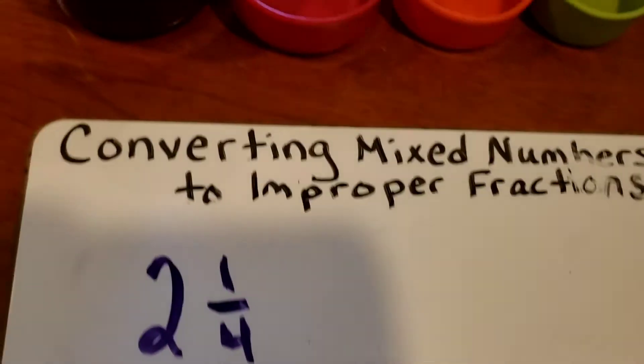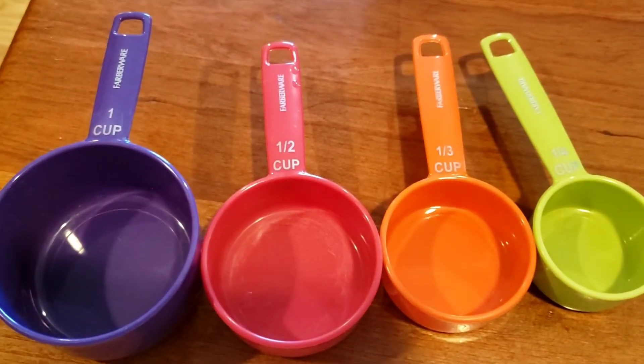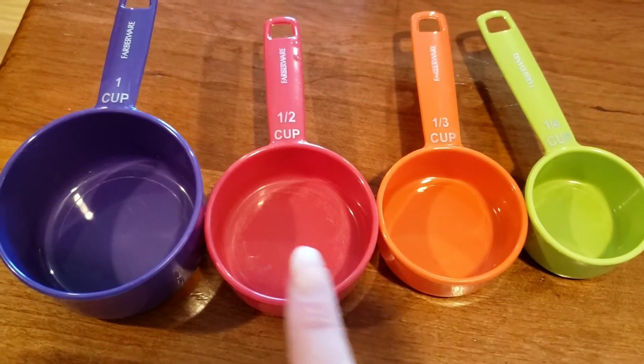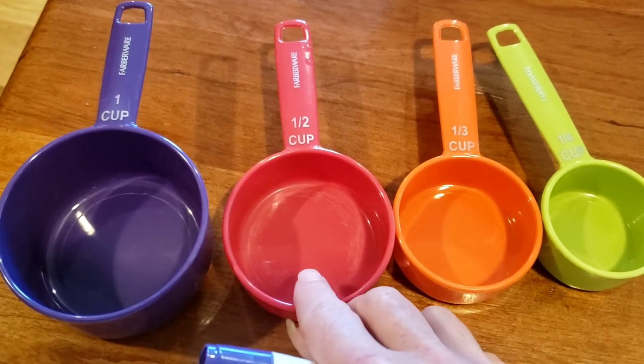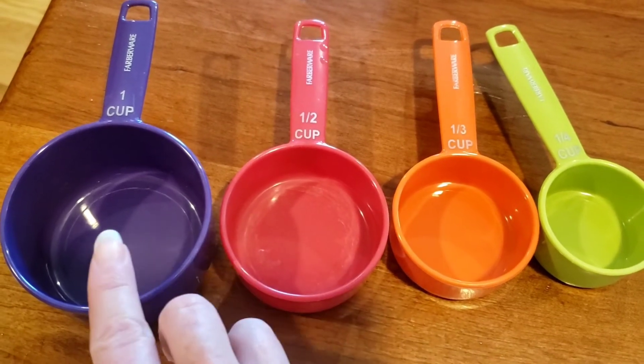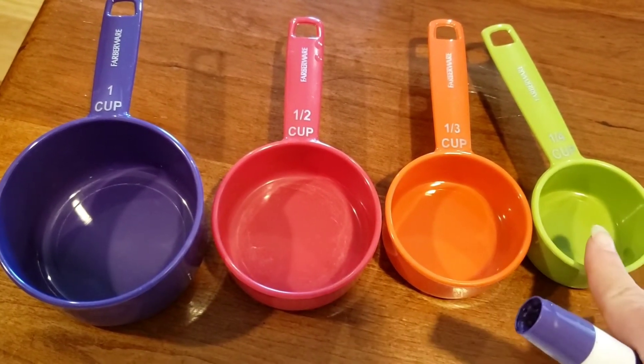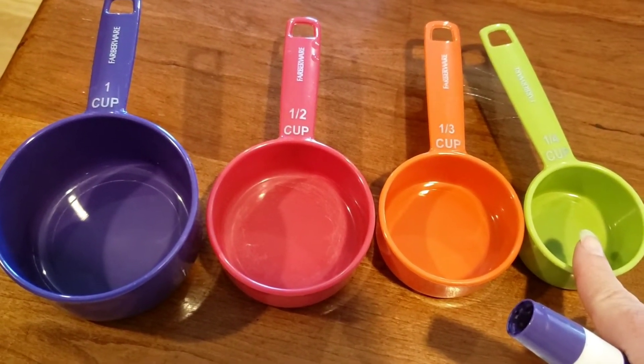For example, when you're baking you've probably used mixed numbers with measuring cups. You might have had to use one whole cup of flour plus a half a cup of flour, or one whole cup of flour and one-fourth of a cup of flour.